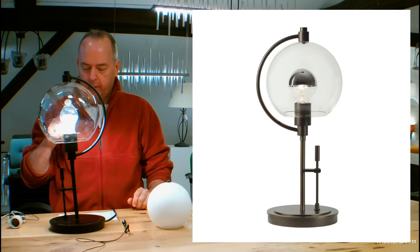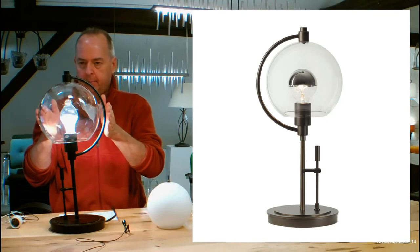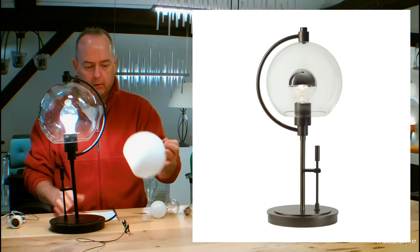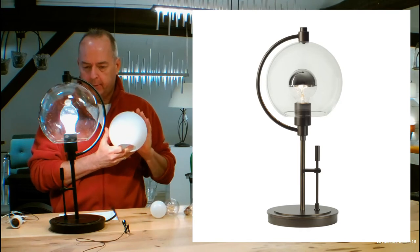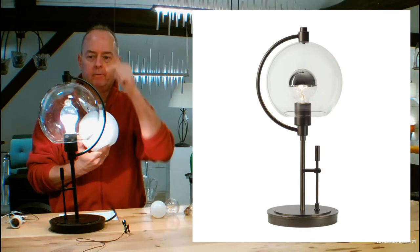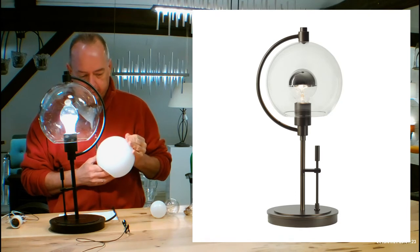Glass is 7.34 inches high, 8.3 inches in diameter. I have the smaller one from the floor lamp here because I want to show you what opal glass is like versus the clear glass and we'll get into that in just a second.